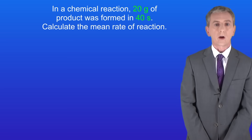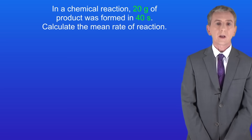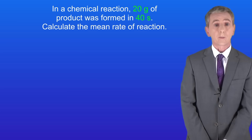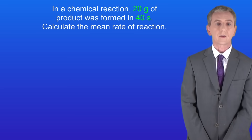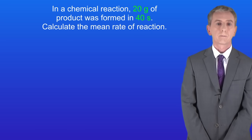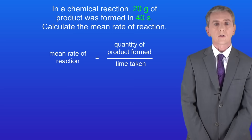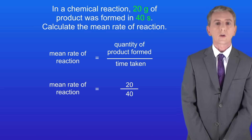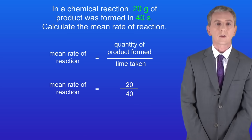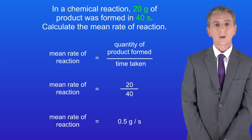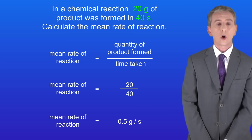Here's a question for you to try. In a chemical reaction 20 grams of product was formed in 40 seconds — calculate the mean rate of reaction. Pause the video and try this yourself. The mean rate of reaction is the quantity of product formed divided by the time taken. We've got 20 grams of product formed in 40 seconds. 20 divided by 40 gives us a mean rate of reaction of 0.5 grams per second.